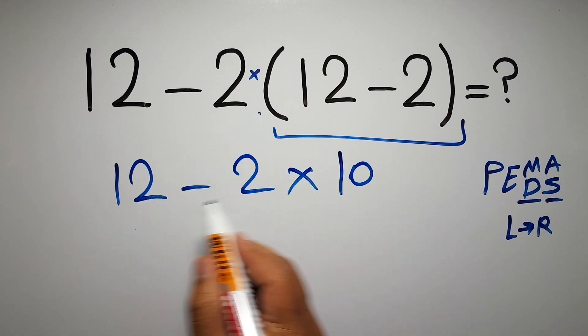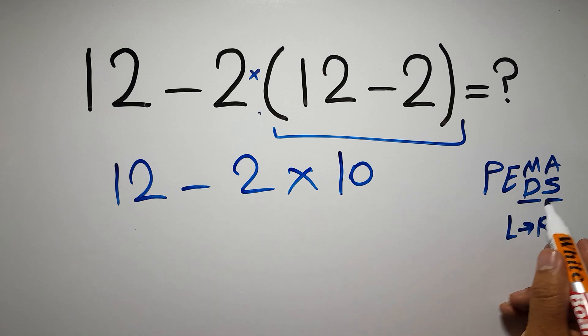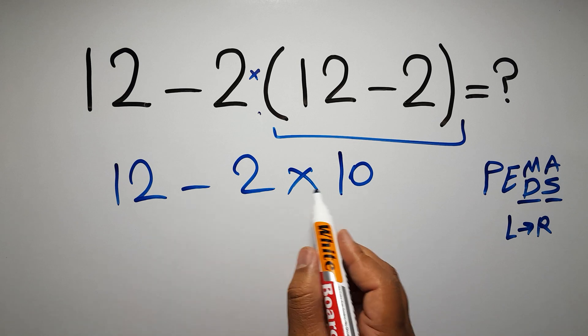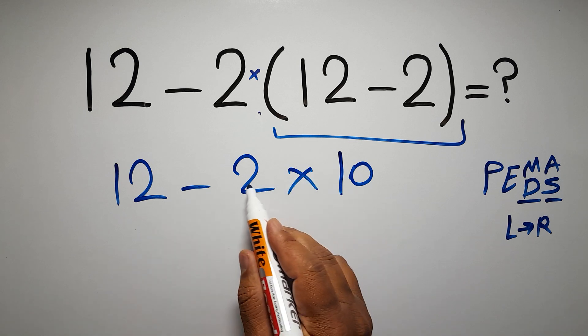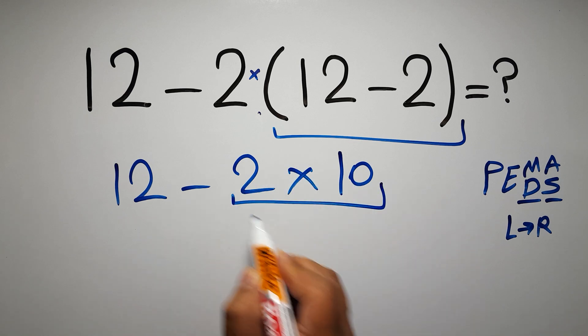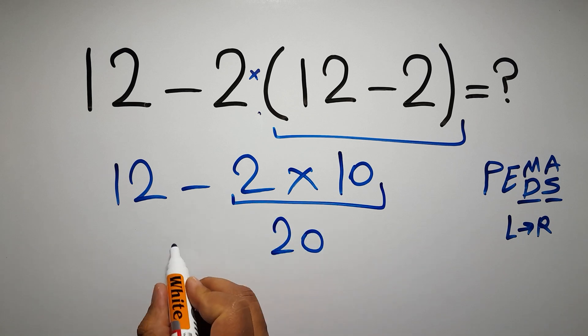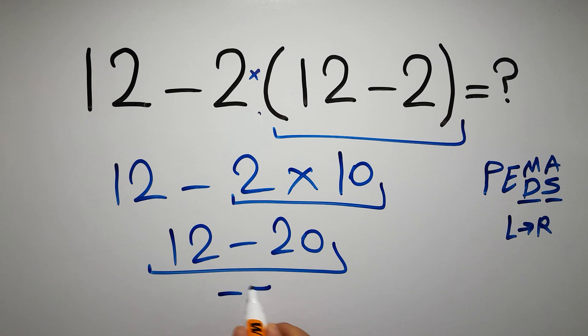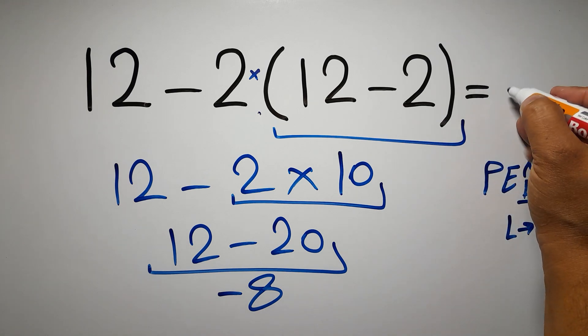Now we have one subtraction and one multiplication. In PEMDAS, multiplication comes before subtraction, so here first we have to do this multiplication. 2 times 10 gives us 20, and 12 minus 20 is just negative 8. This is our final answer to this problem. The correct answer is negative 8.